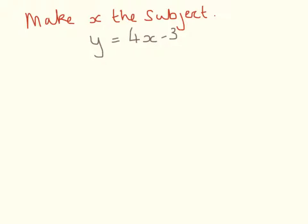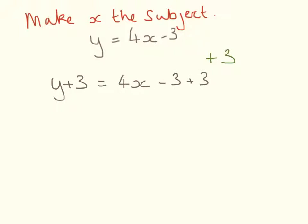So this is our question: make x the subject. The first thing we need to do is to get rid of the 3, so I'm going to plus 3 to both sides. That gives me y plus 3 equals 4x minus 3 plus 3. Because we have a minus 3 and a plus 3 on this side, we can just cross those out, so what we have is y plus 3 equals 4x.